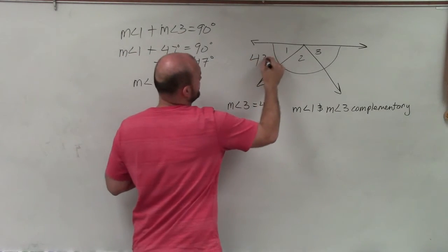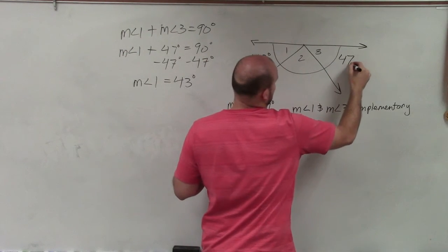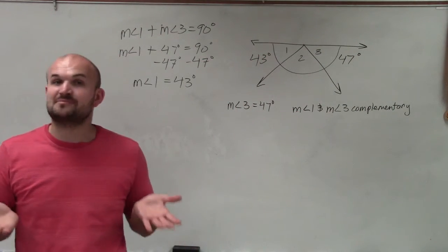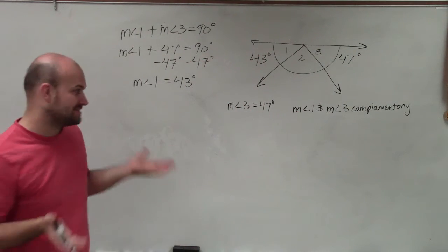So now I know this is 43 degrees and this is 47 degrees. And again, remember that all these angles are going to add up to make a line. So therefore, they're going to add up to be 180.